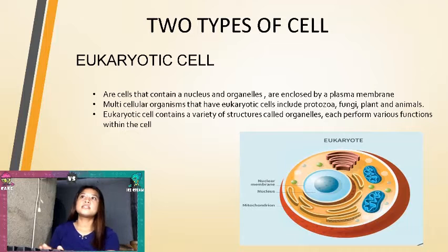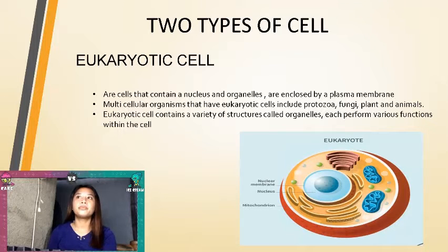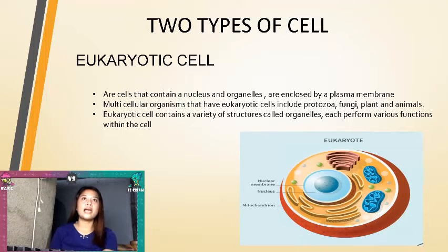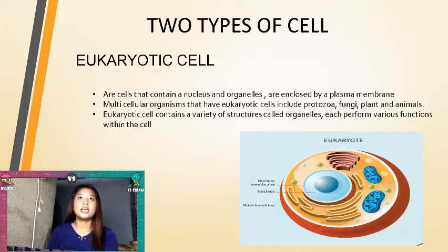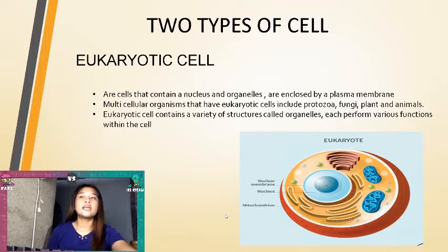Eukaryotic cells are cells that contain a nucleus and organelles, and are enclosed by a plasma membrane. Multicellular organisms that have eukaryotic cells include protozoa, fungi, plants, and animals. Eukaryotic cells contain a variety of structures called organelles, each performing various functions within the cell. This is the eukaryotic cell picture.